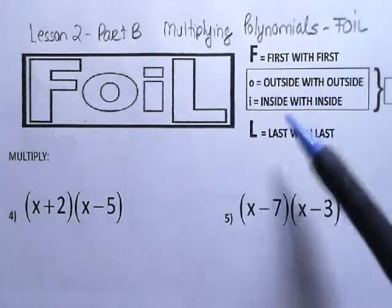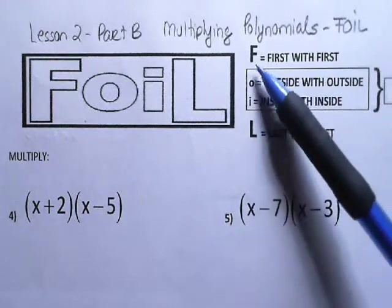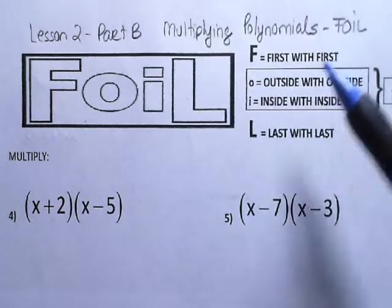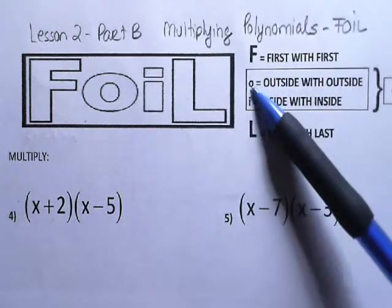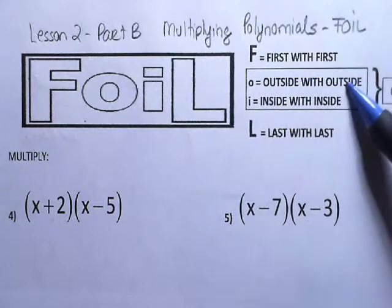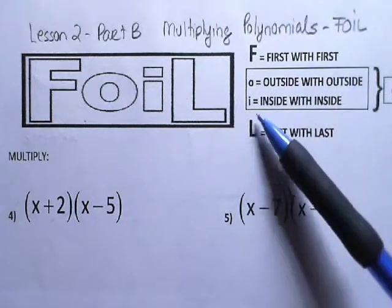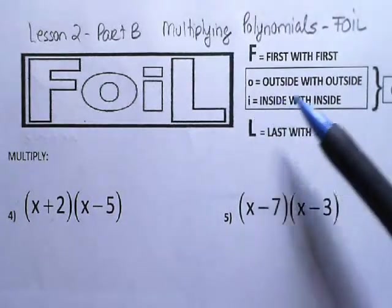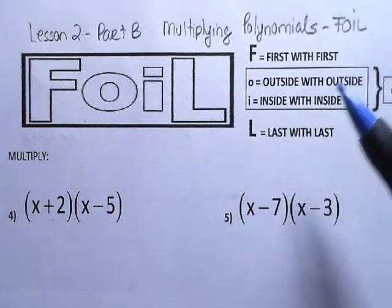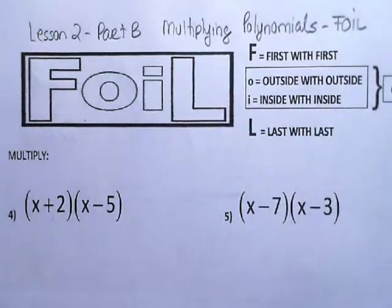FOIL is a strategy that stands for: F stands for first times first. O stands for the outside terms times the outside terms. I stands for inside terms times inside terms. L is last term times last term.